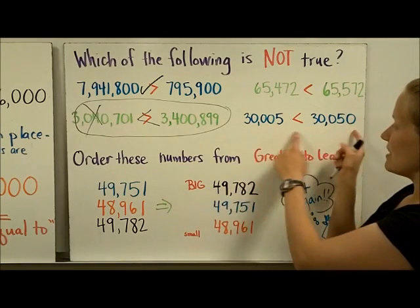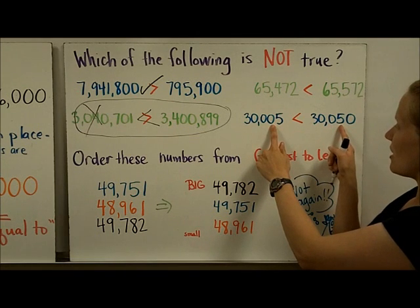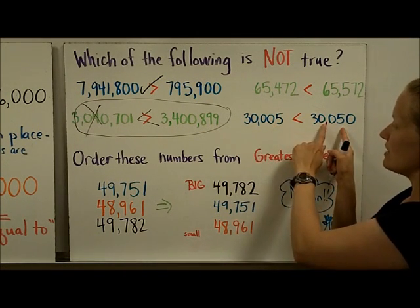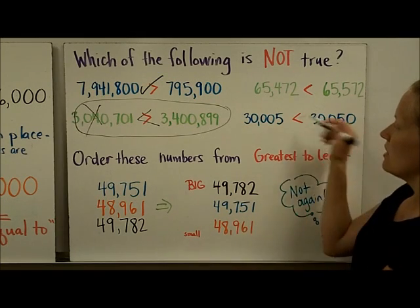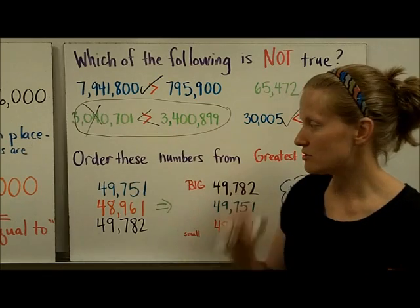And then finally, same number of digits. Same, those are the same, those are the same. In this spot, this tens digit is bigger than this tens digit. So yes, in fact, this number is larger, and that would be correct. So I would circle this as my only correct answer.